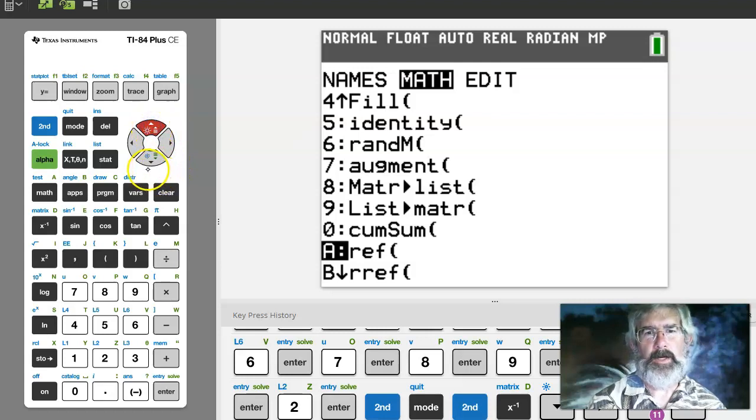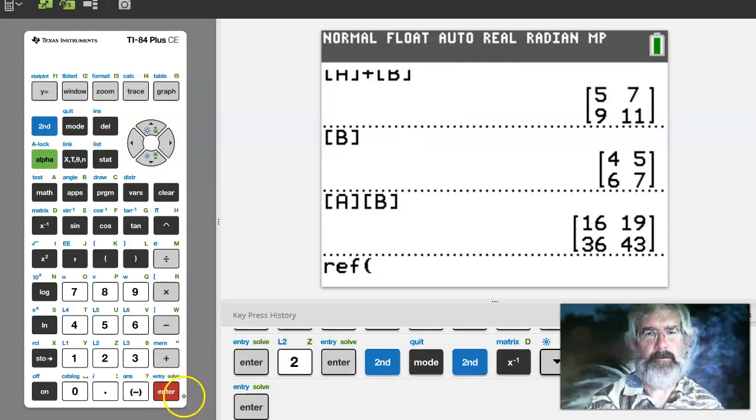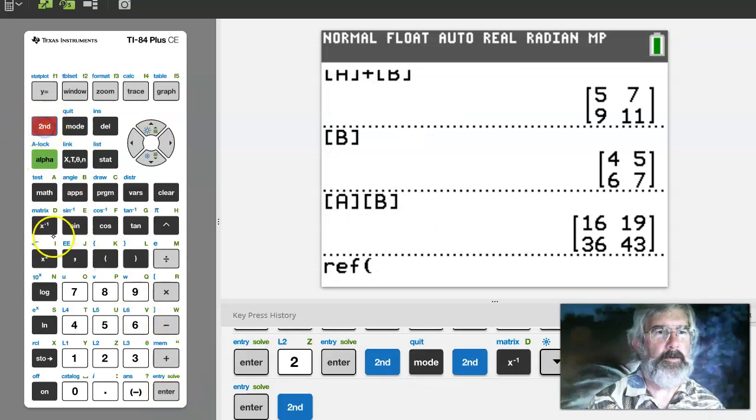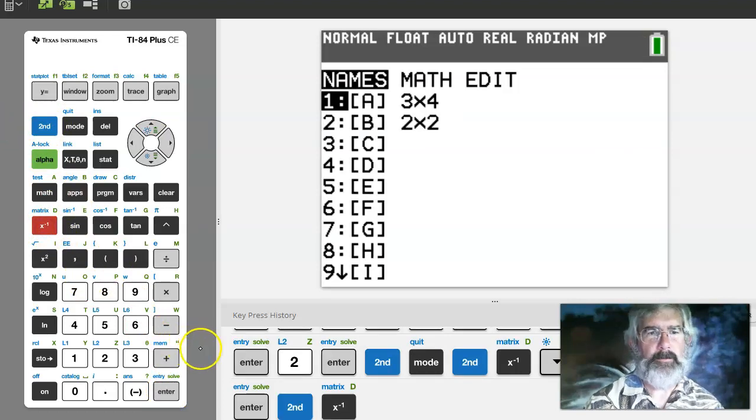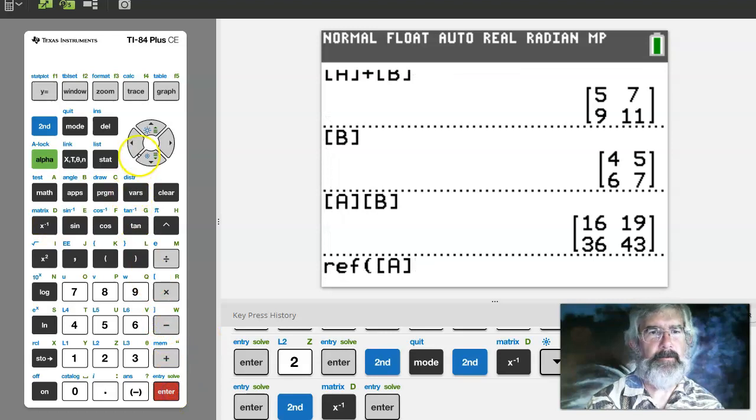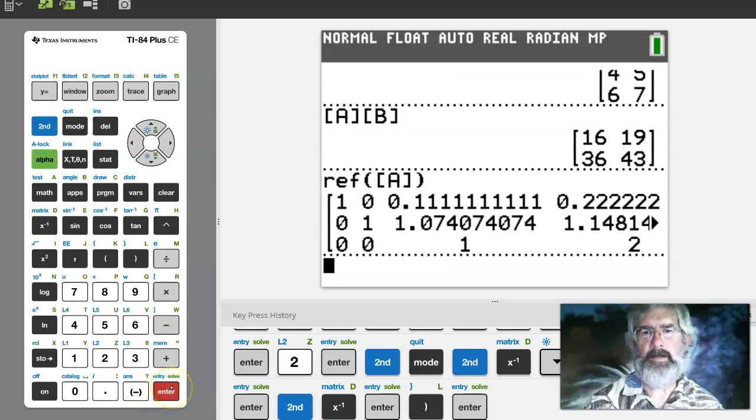So if I grab row echelon form here and enter, I'm going to say what matrix I want. So go to matrix under names, just enter gives me A, and enter, and it gives me the row echelon form of matrix A. What was matrix A again?